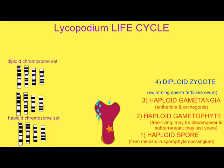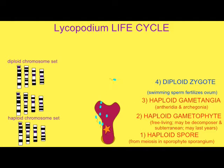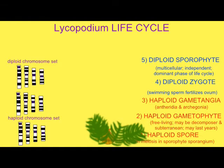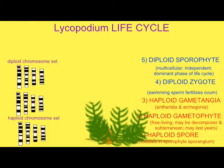At some point, the gametophyte produces archegonia and antheridia, which then produce sperm and ova, which can then fertilize and produce a diploid zygote. The diploid zygote undergoes mitosis to develop into the club moss.